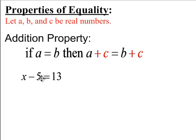If you have x minus 5 in place of the A, 13 represents the B. Well, if you have to solve for x, you're going to add 5 to both sides to solve.